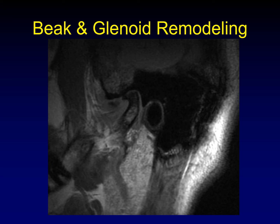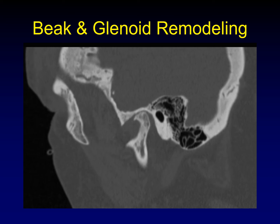In late-stage degenerative disease, the glenoid fossa loses its smooth, cup-like contour and begins to remodel in response to the altered condylar head shape — a very late finding indicative of severe disease. On sagittal CT, you can see the glenoid taking on a flat appearance rather than a rounded cup, with a sharp beak osteophyte off the front of the condylar head.